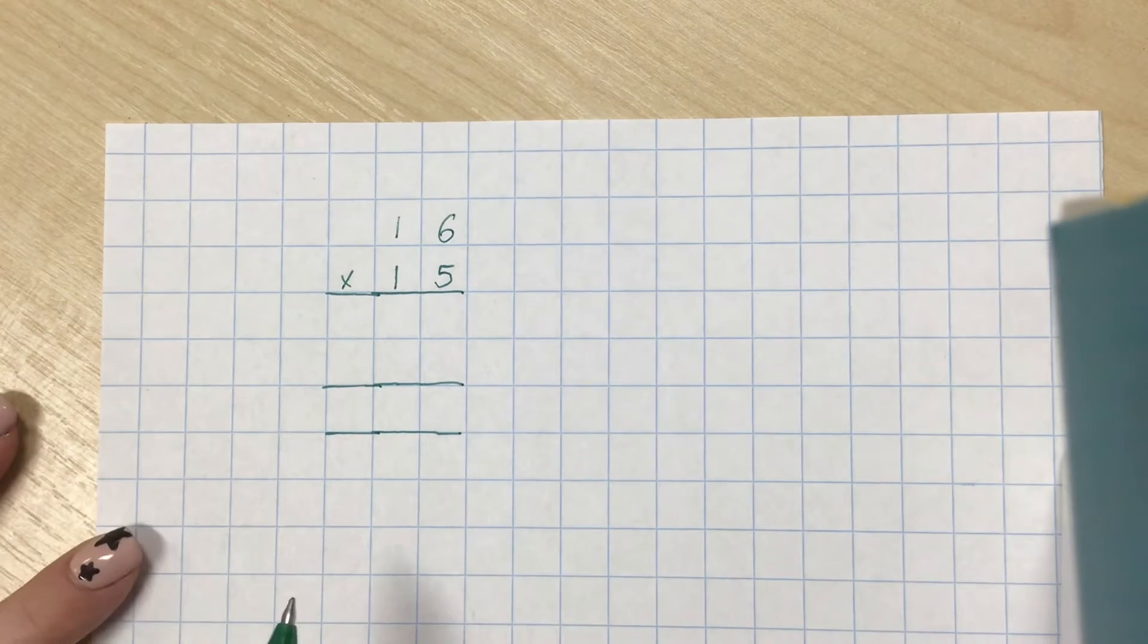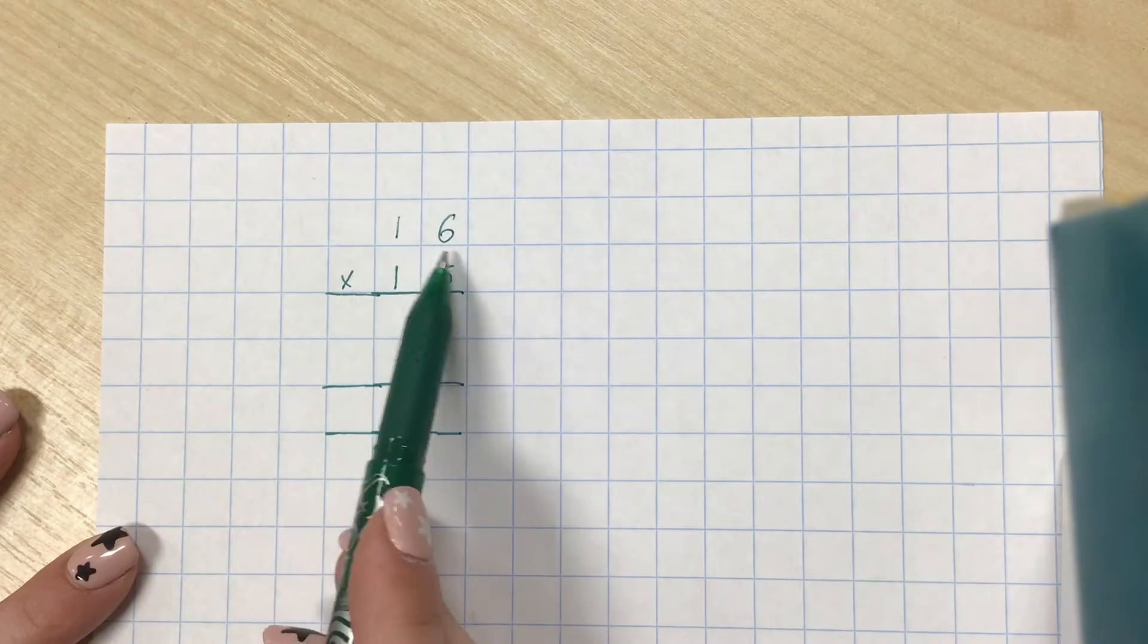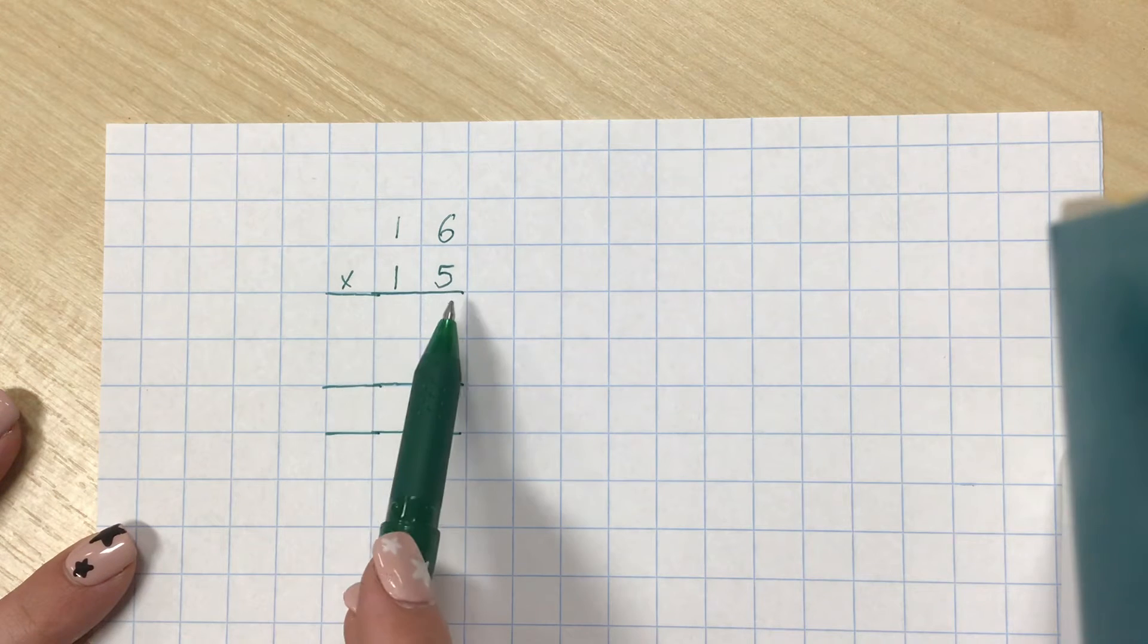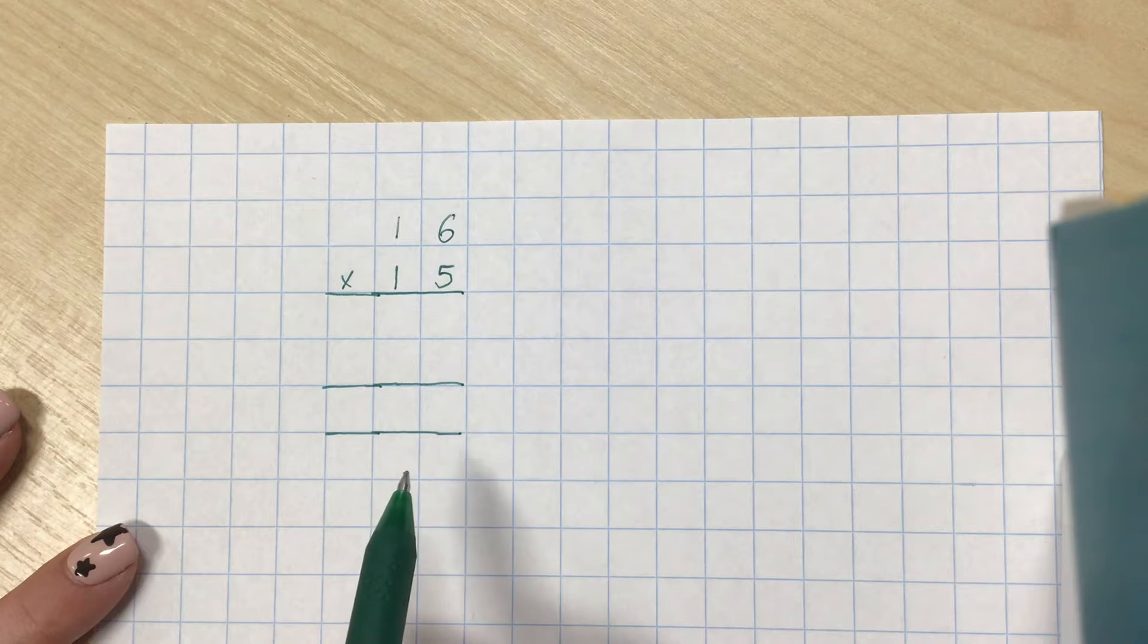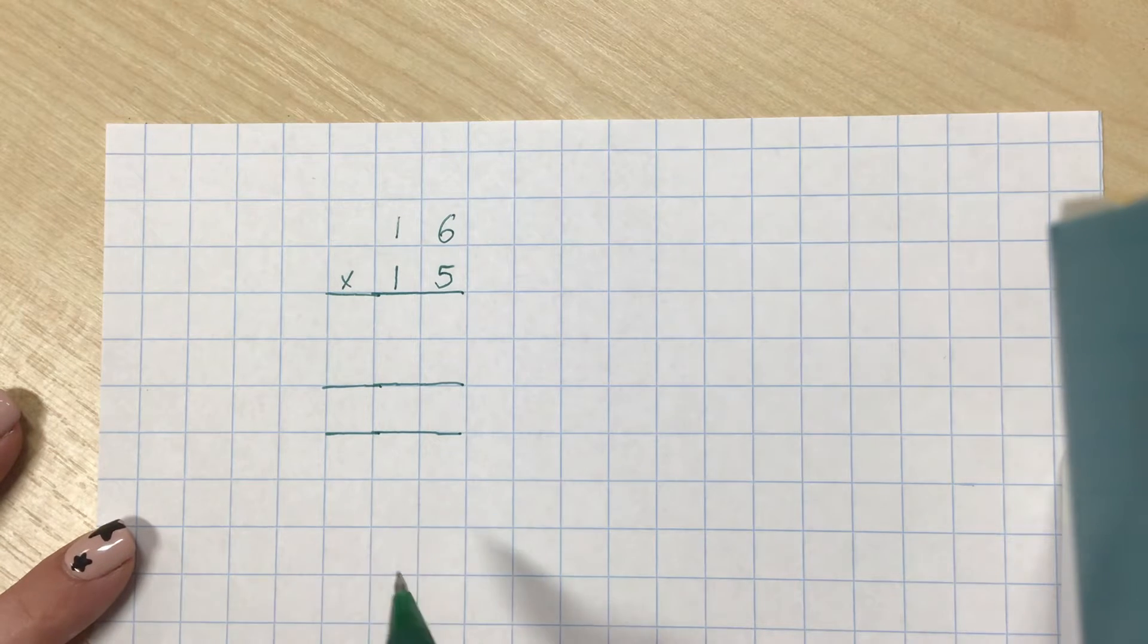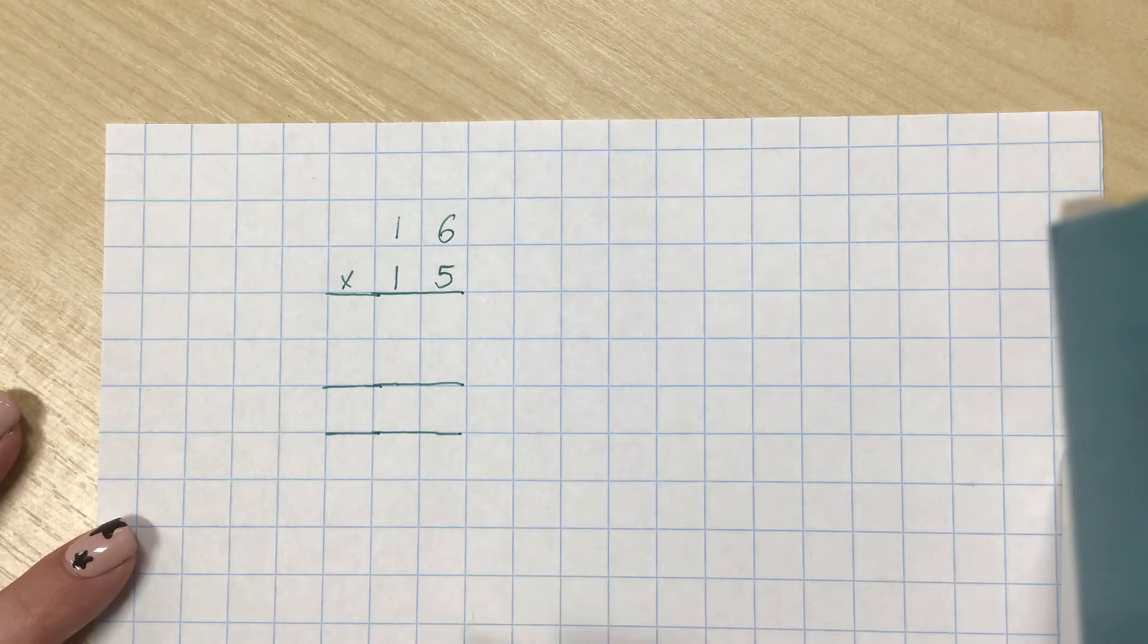Here I have an example of multiplying a two-digit number, 16, by another two-digit number. I've done it this way to go over those jottings and what you do, where you put them, and which ones you add, because it can be a little confusing, so don't worry if you've struggled.